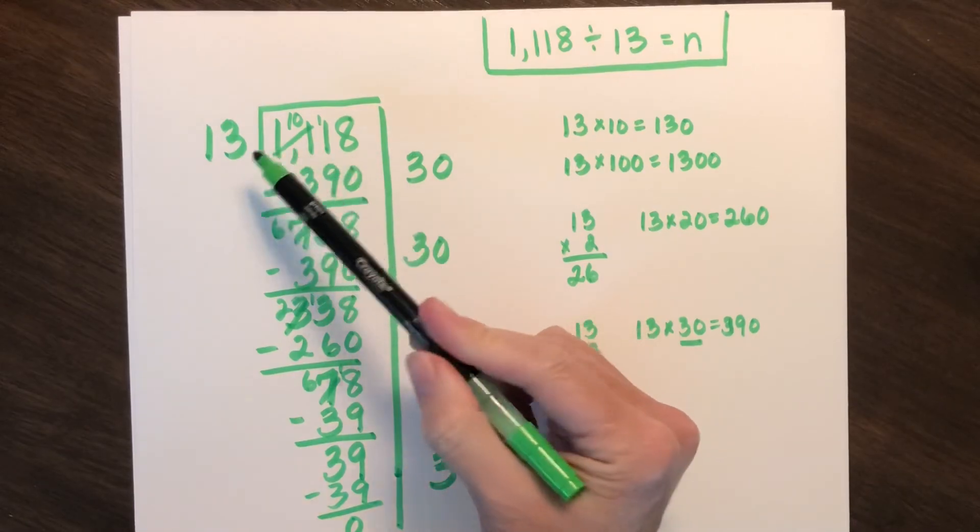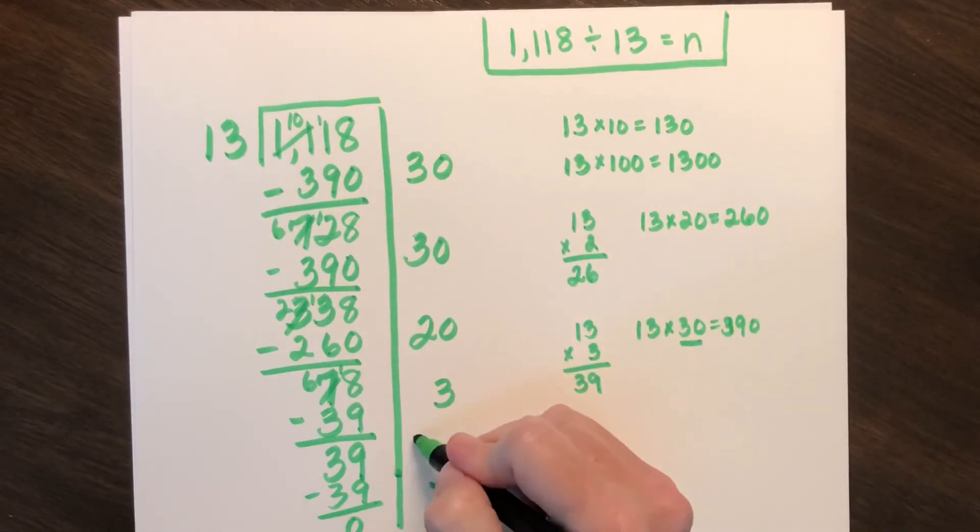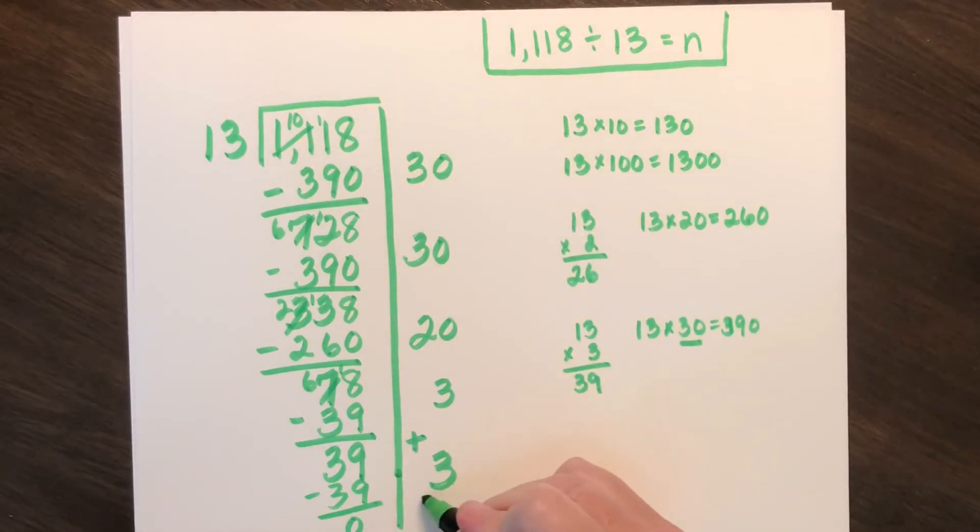That gives me 39 again. So I can group that into 3 more equal groups. And now I have divided evenly into 13 groups.